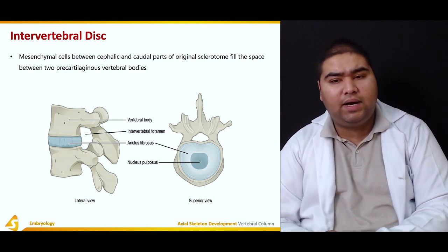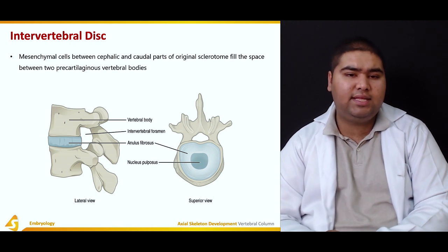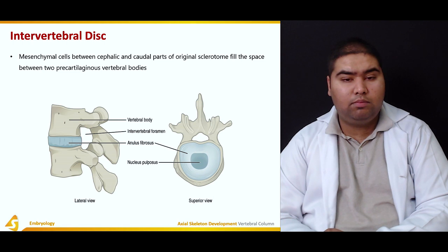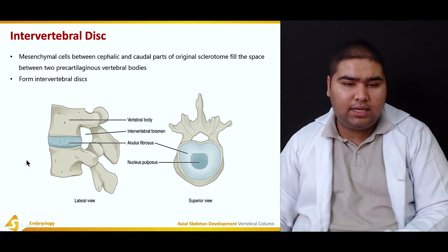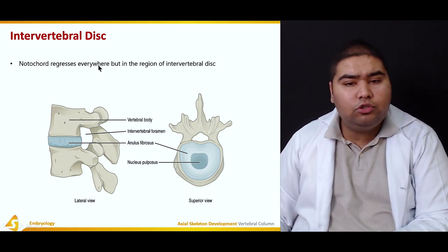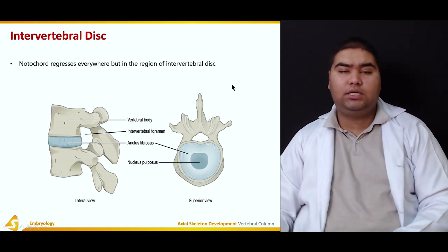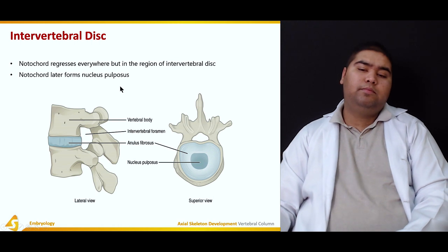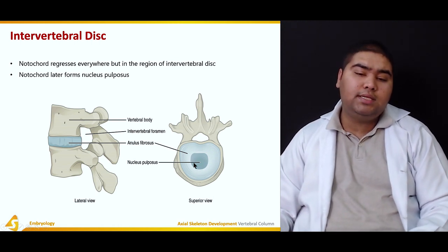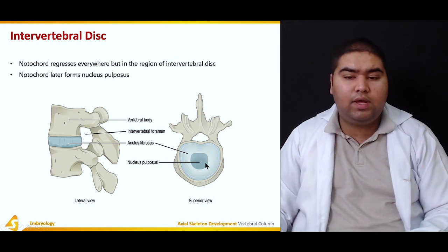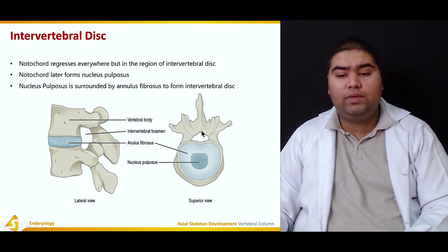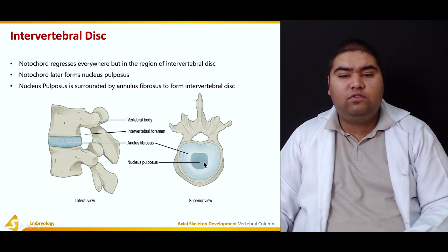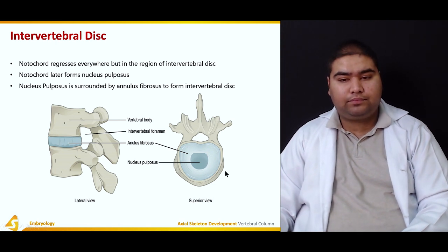At the same time, mesenchymal cells between the cranial and caudal parts of the original sclerotome fill the space between the two pre-cartilaginous vertebral bodies — they form the intervertebral discs. The notochord regresses everywhere except in the region of the intervertebral disc. The remnant of the notochord in the intervertebral disc is the nucleus pulposus, which is surrounded by the annulus fibrosis to form the intervertebral disc.